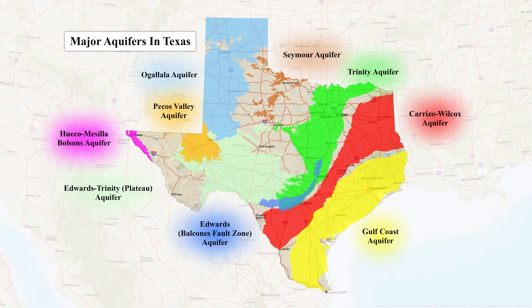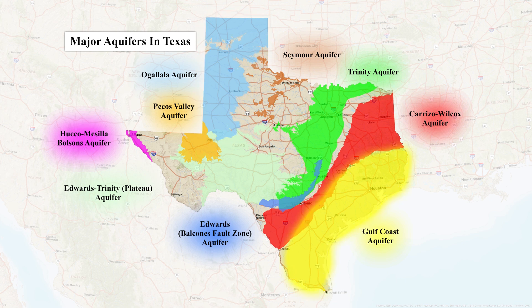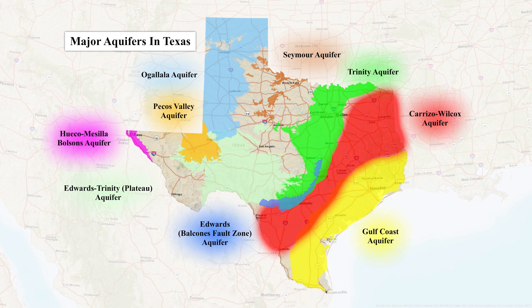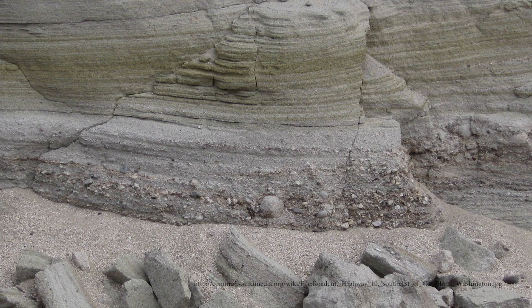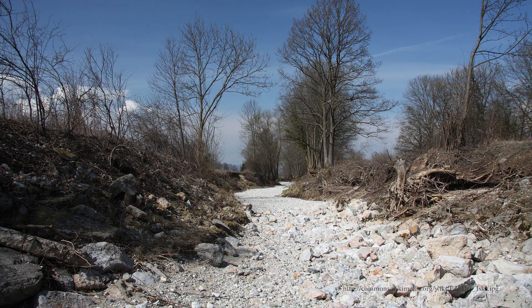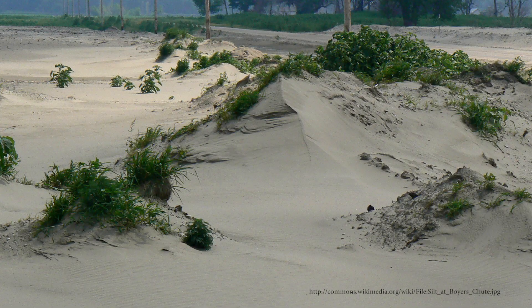Of the nine major aquifers in Texas, six of them — the Ogallala, Gulf Coast, Carrizo-Wilcox, Pecos Valley, Seymour, and Waco-Macia-Bulsans — consist of sedimentary rock with relatively high porosity and permeability. Sedimentary rocks are composed of sand, gravel, silt, and clay.